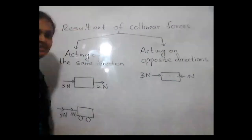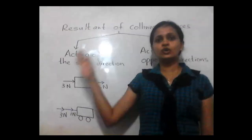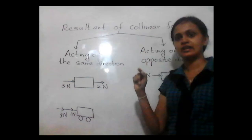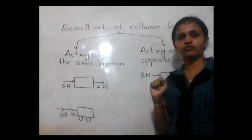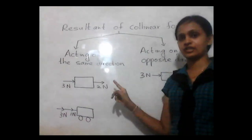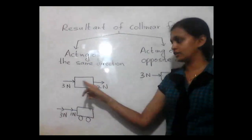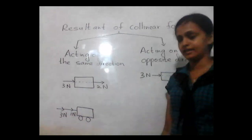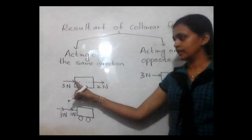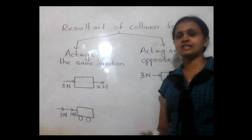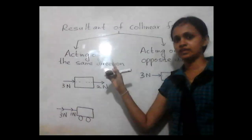First, we will consider the resultant of collinear forces. The term collinear stands for forces acting on the same line. Collinear forces can be classified into two types. The first type is collinear forces acting in the same direction. Here I have given an example: two forces act on the same object along the same line, so they are collinear, and the arrowhead shows the direction of the force applied. The resultant of collinear forces acting in the same direction is equal to the sum of the two forces.